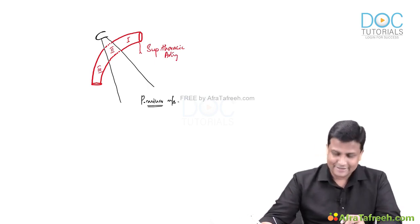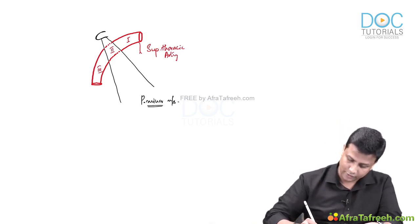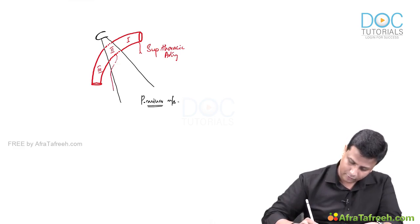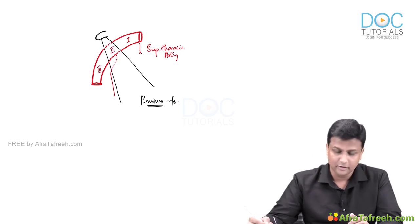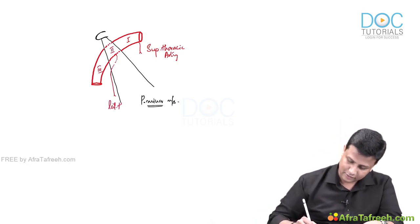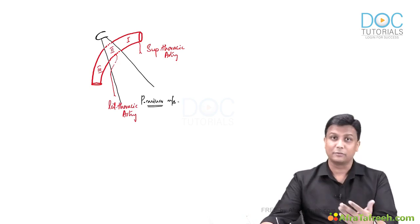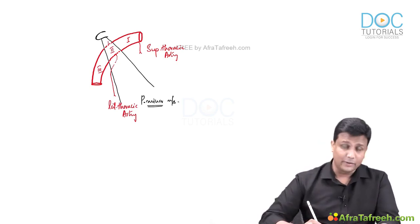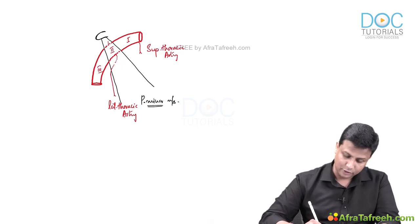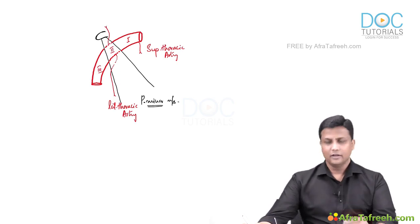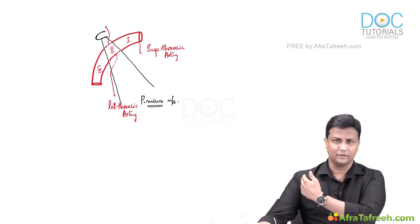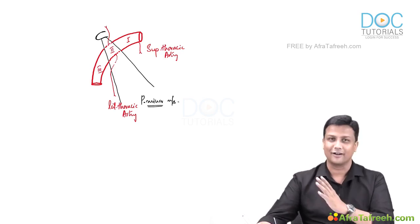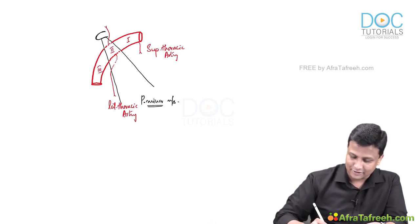Welcome to the second part. The second part gives two branches. One branch runs along the lateral border of the pectoralis minor — that is the lateral thoracic artery. It makes sense: the first part is above the thorax giving the superior thoracic artery, and the second part is a little lateral to the thorax giving the lateral thoracic artery. The second branch goes toward the acromion process — that is the thoracoacromial trunk.